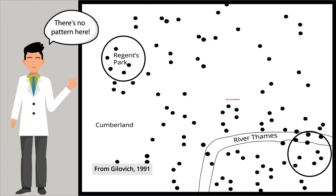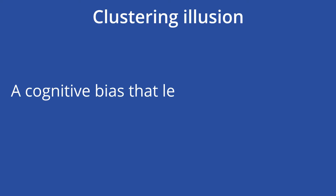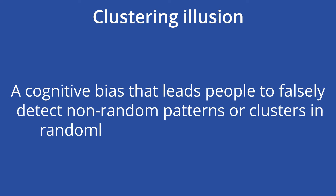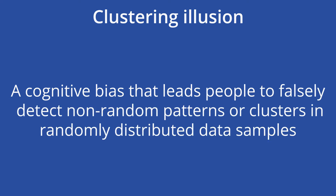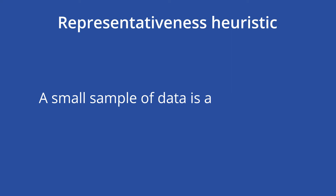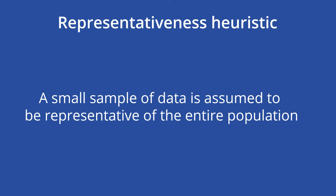These false patterns become misleading when making assessments of the sample data. The clustering illusion is a cognitive bias that leads people to falsely detect non-random patterns or clusters in randomly distributed data samples. Two preeminent scholars on the clustering illusion are psychologists Daniel Kahneman and Amos Tversky. They assert that the clustering illusion is caused by the representativeness heuristic, a cognitive shortcut whereby a small sample of data is assumed to be representative of the entire population from which it is derived.